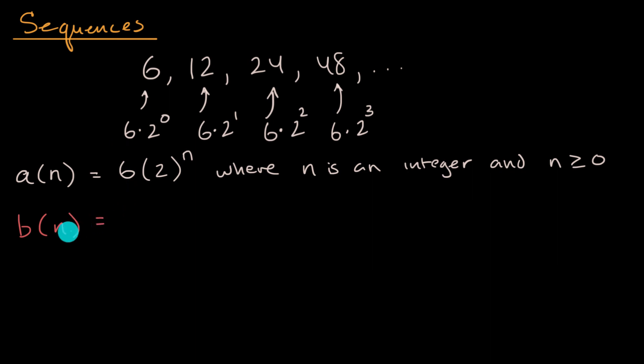So what you could do is, when you input a one, this essentially becomes a zero. How do I do that? Well, I just subtract one from it. So I could say six times two to the n minus one power, where n is an integer and n is greater than or equal to one.